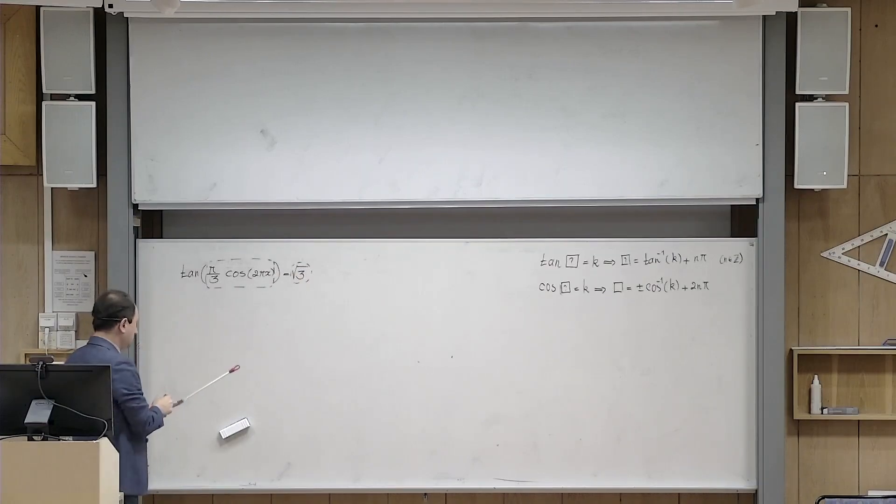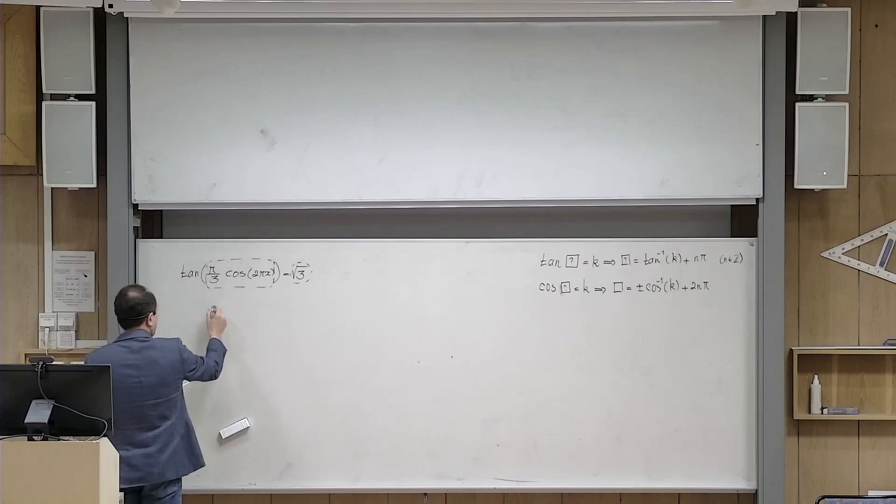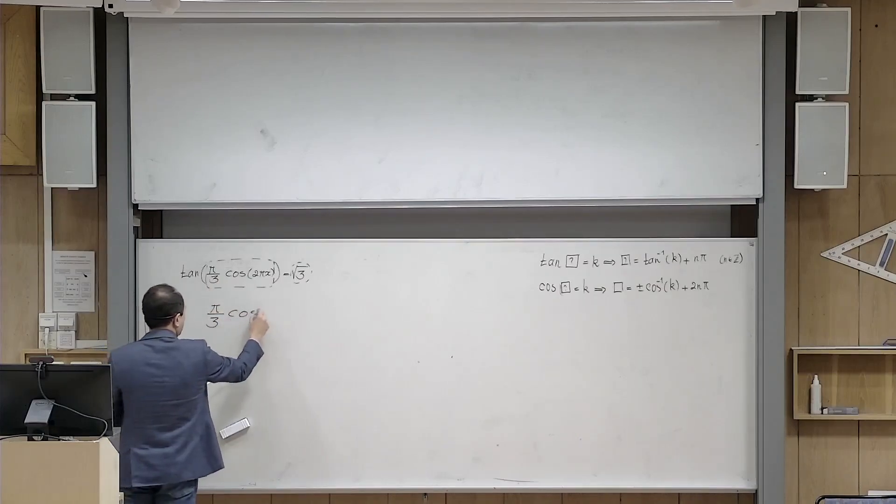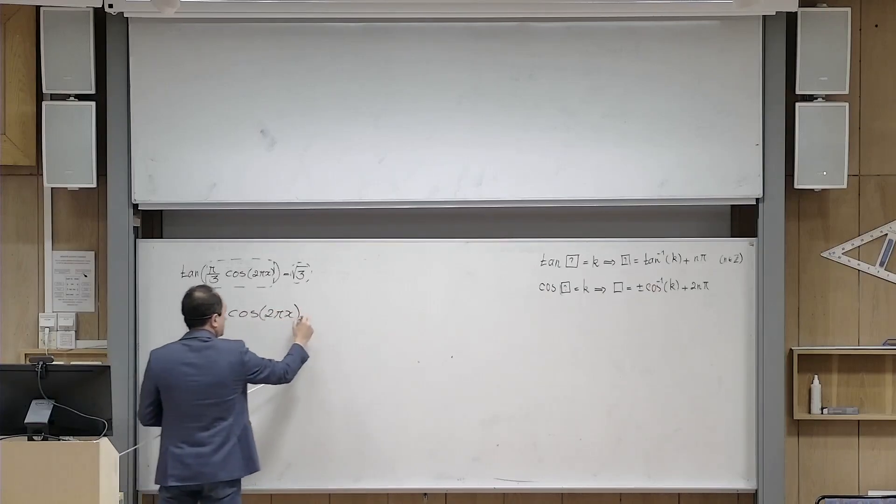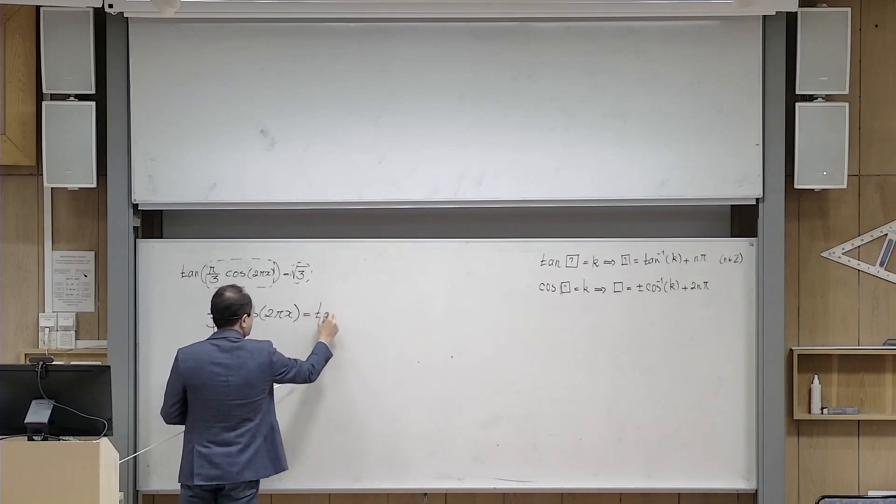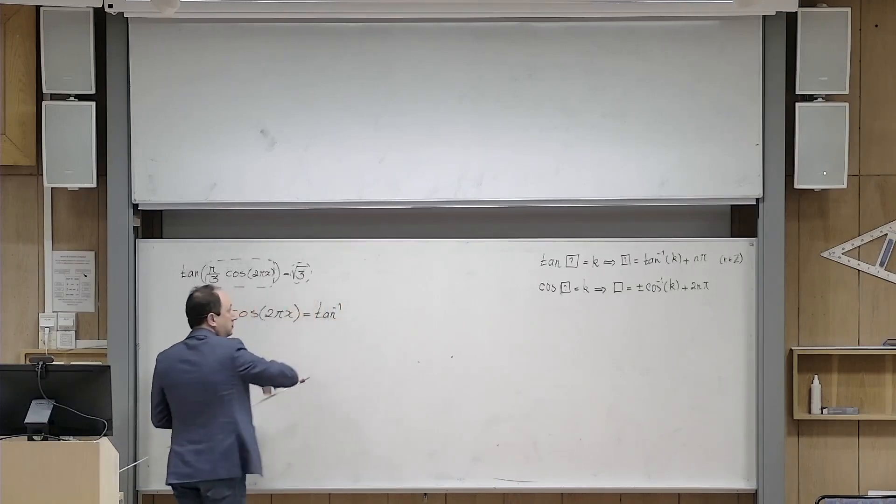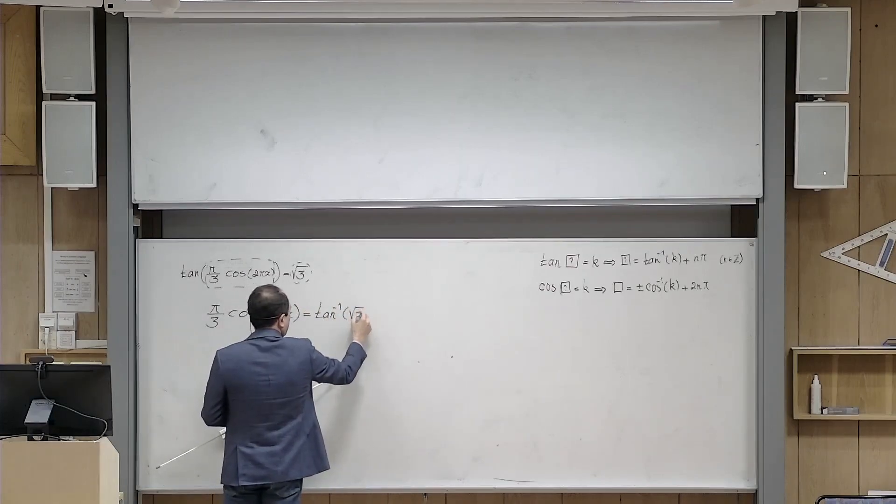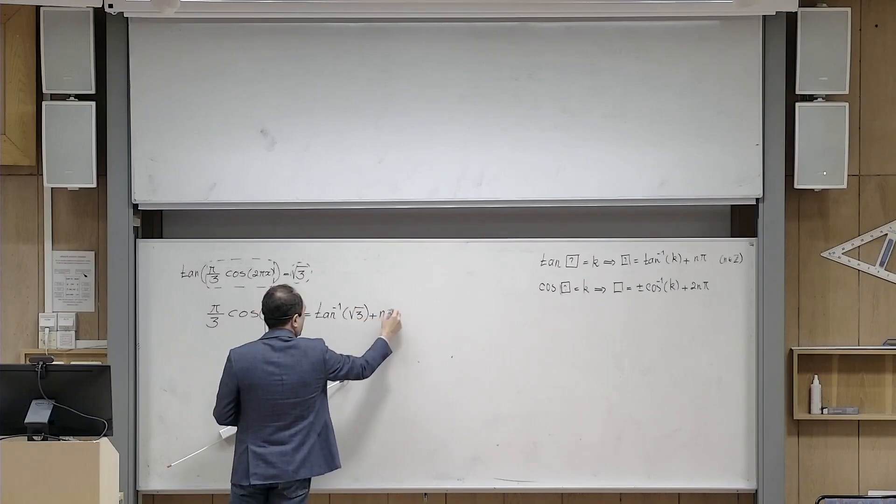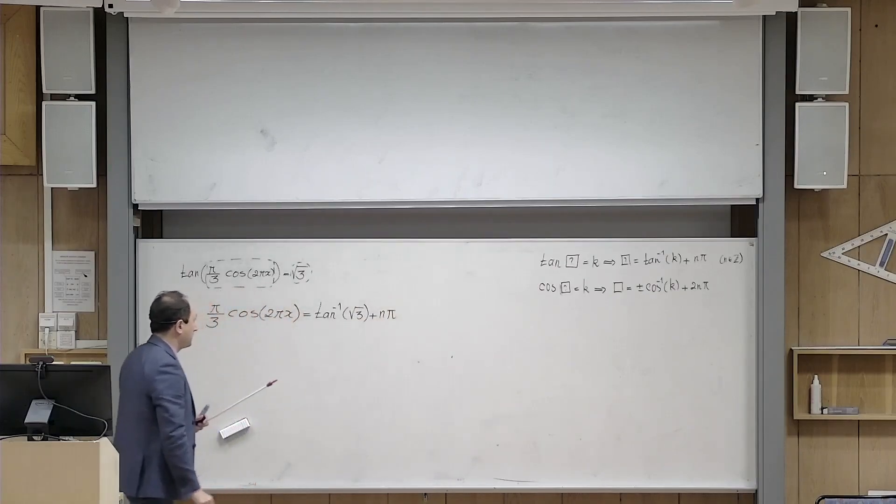According to that relation, what is inside the box, meaning pi over 3 times cosine 2 pi x, is equal to tangent inverse of that number, tangent inverse of this number k, and then plus n, an integer, multiplied by pi.